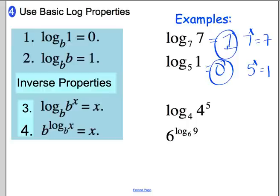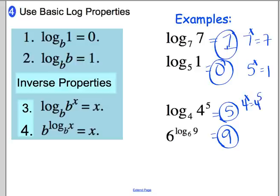The other two properties: log base b of b to the x just equals x, and b to the log base b of x also equals x. For example, log base 4 of 4 to the 5 equals 5. And 6 to the log base 6 of 9 equals 9. If you think about the log loop for the first one, it would be 4 to what equals 4 to the 5th — you can see x is 5. For the second, rewriting it gives log base 6 of what equals log base 6 of 9, so x is 9.